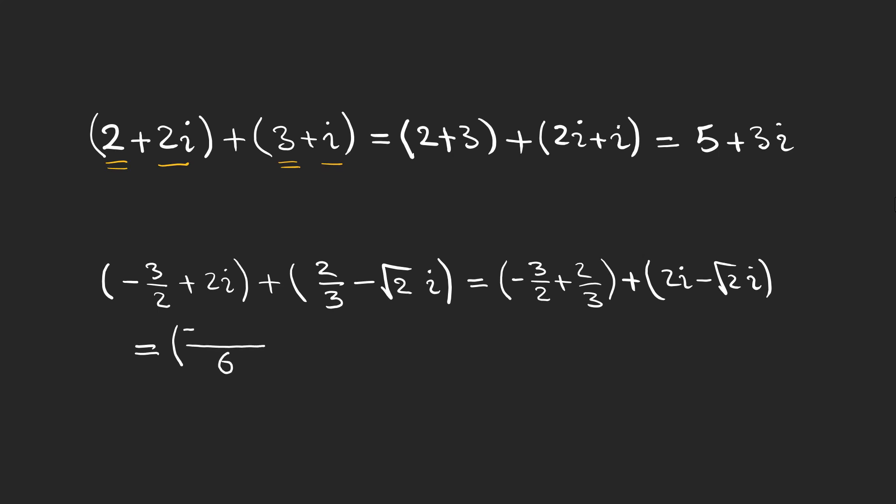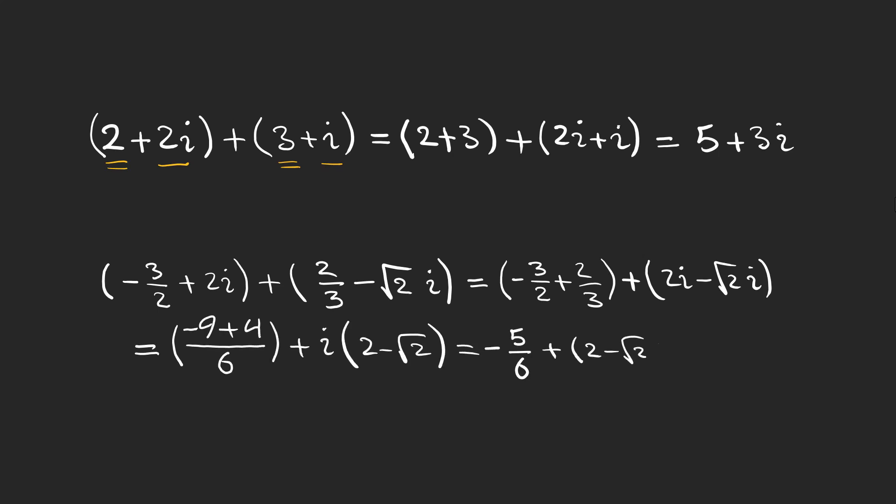After some calculations you can see that we have minus five over six plus the imaginary part, which is two minus the square root of two, multiplied by i — that is the imaginary part of our complex number.